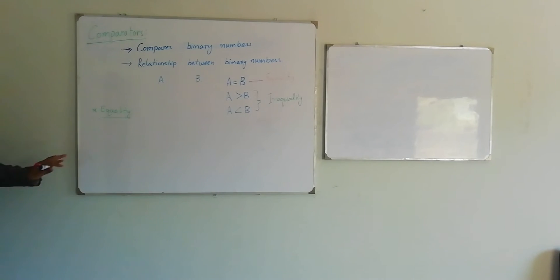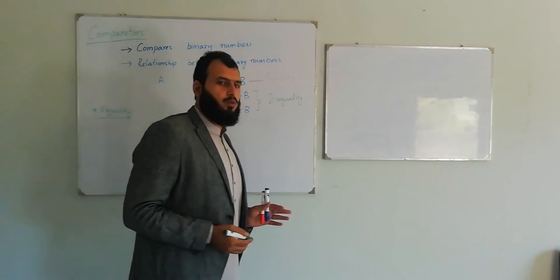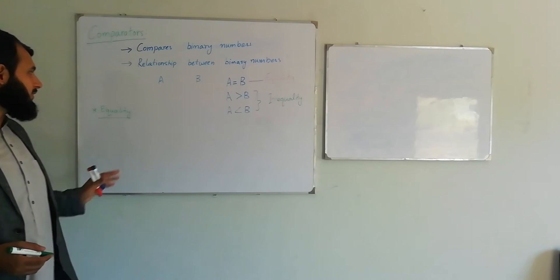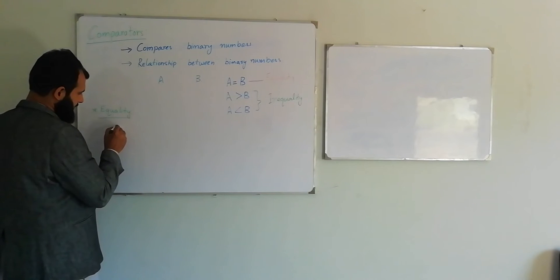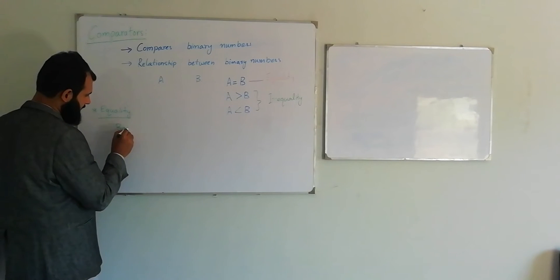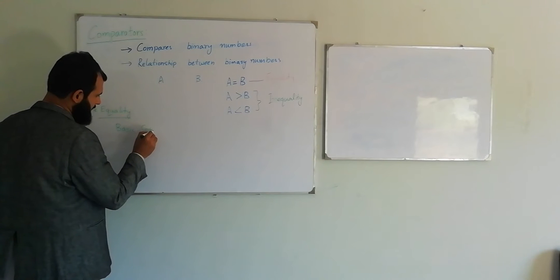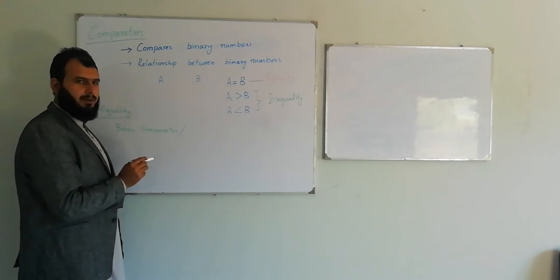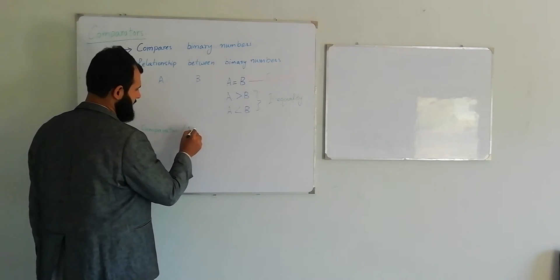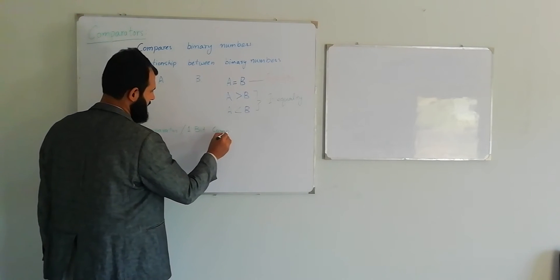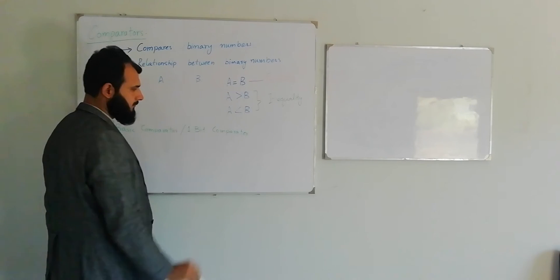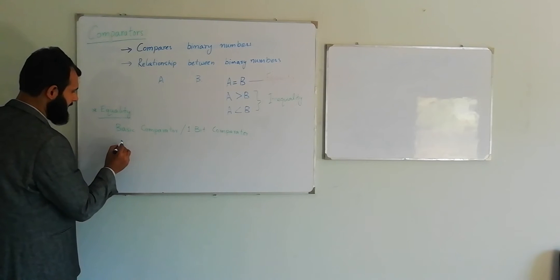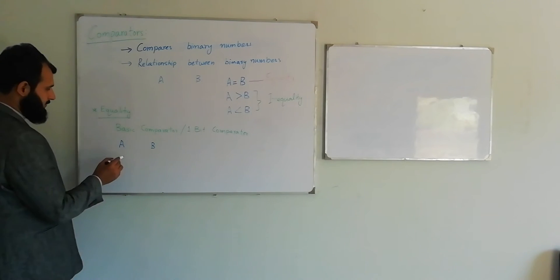For the equality relationship, let's design a very basic comparator which will compare one bit to find the property of equality. This first example is the basic comparator, also called a one-bit comparator, with inputs bit A and bit B.